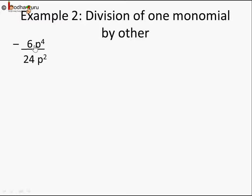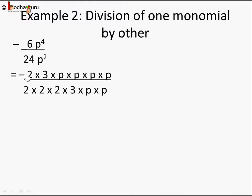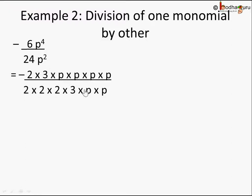Let's take another example with a negative sign: minus 6p⁴ divided by 24p². Keep the minus sign and break the numerator into prime factors: 6 becomes 2 × 3, and p⁴ becomes p × p × p × p. For the denominator, the prime factors of 24 are 2 × 2 × 2 × 3, and p² is p × p.